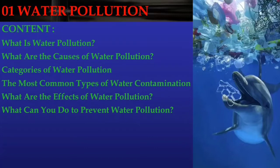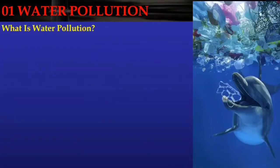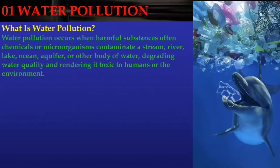Water pollution occurs when harmful substances — often chemicals or microorganisms — contaminate a stream, river, lake, ocean, aquifer, or other body of water, degrading water quality and rendering it toxic to humans or the environment.